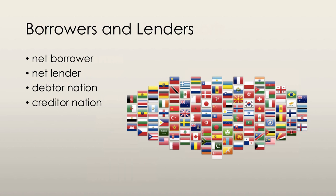A net borrower is a country that is borrowing more from the rest of the world than it is lending. A net lender is a country that is lending more to the rest of the world than it is borrowing. A debtor nation is a country that in its entire history has borrowed more from the rest of the world than it has lent — it has a stock of outstanding debt to the rest of the world that exceeds the stock of its own claims on the rest of the world.